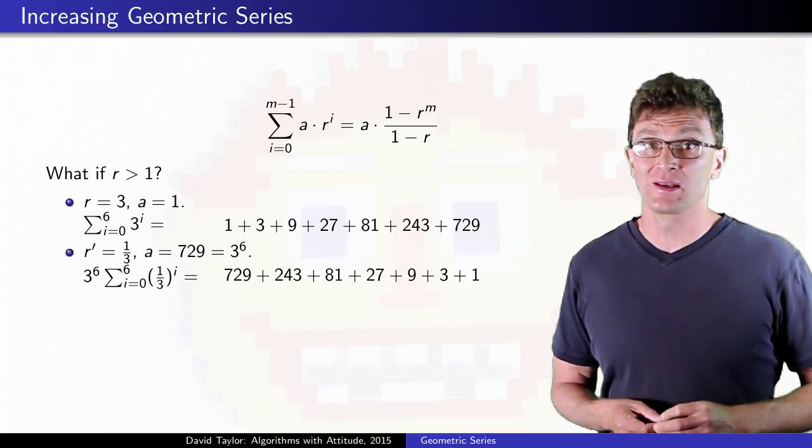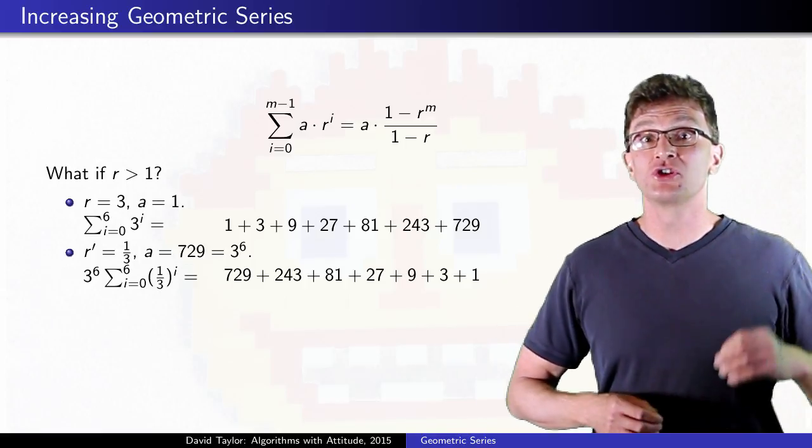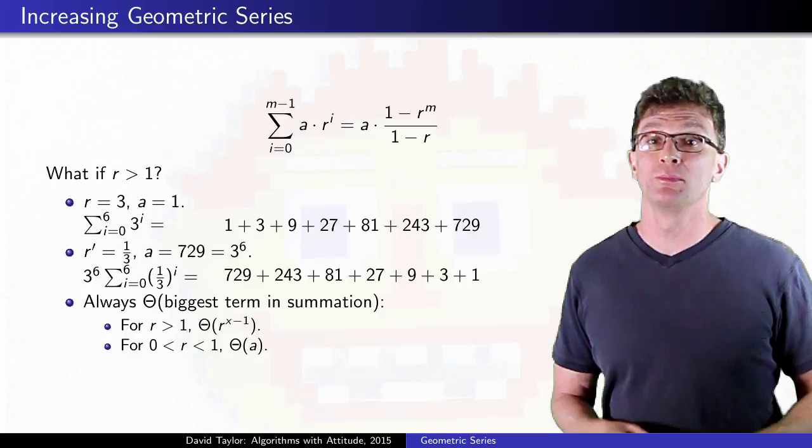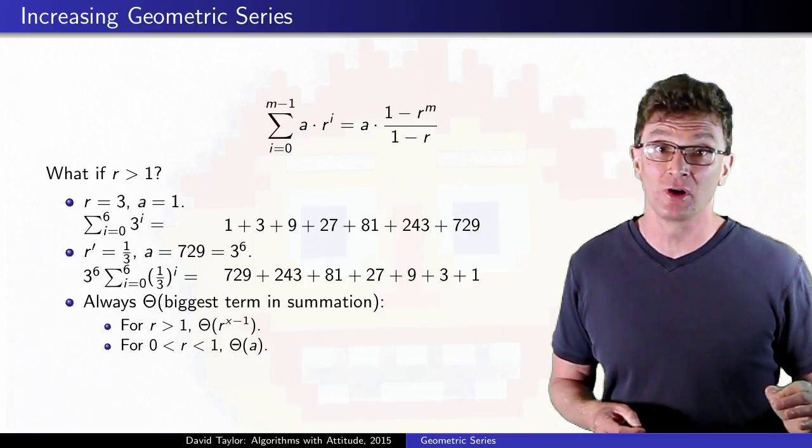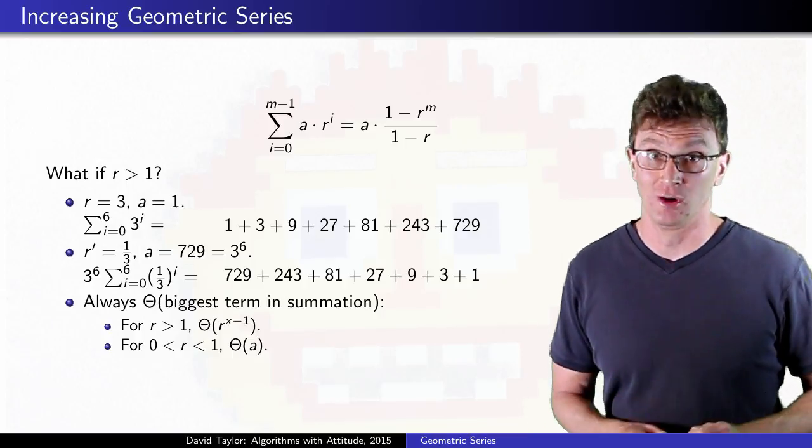For asymptotic analysis, either way, the term grows like the biggest term in the summation. For big r, that will be the last term, for small r, the first term.